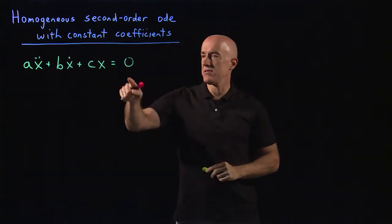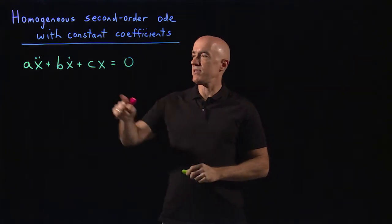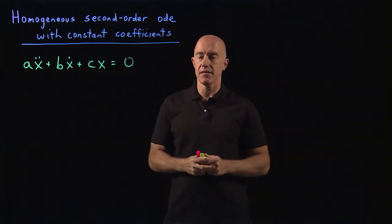Homogeneous means zero on the right hand side. Constant coefficients means a, b, and c are constant.